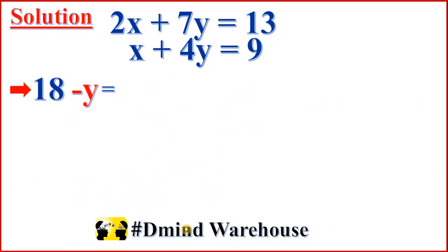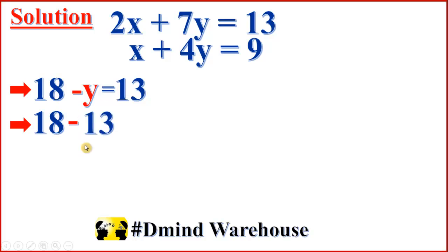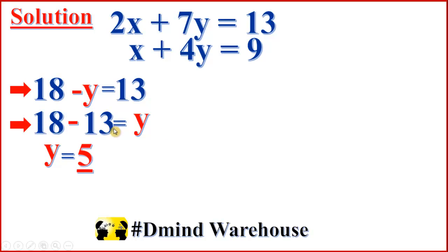So we have 18 minus y equal to 13. When 13 comes to this side it becomes negative 13, giving us negative y equal to 13 minus 18. That is y equal to 18 minus 13, which is 5.